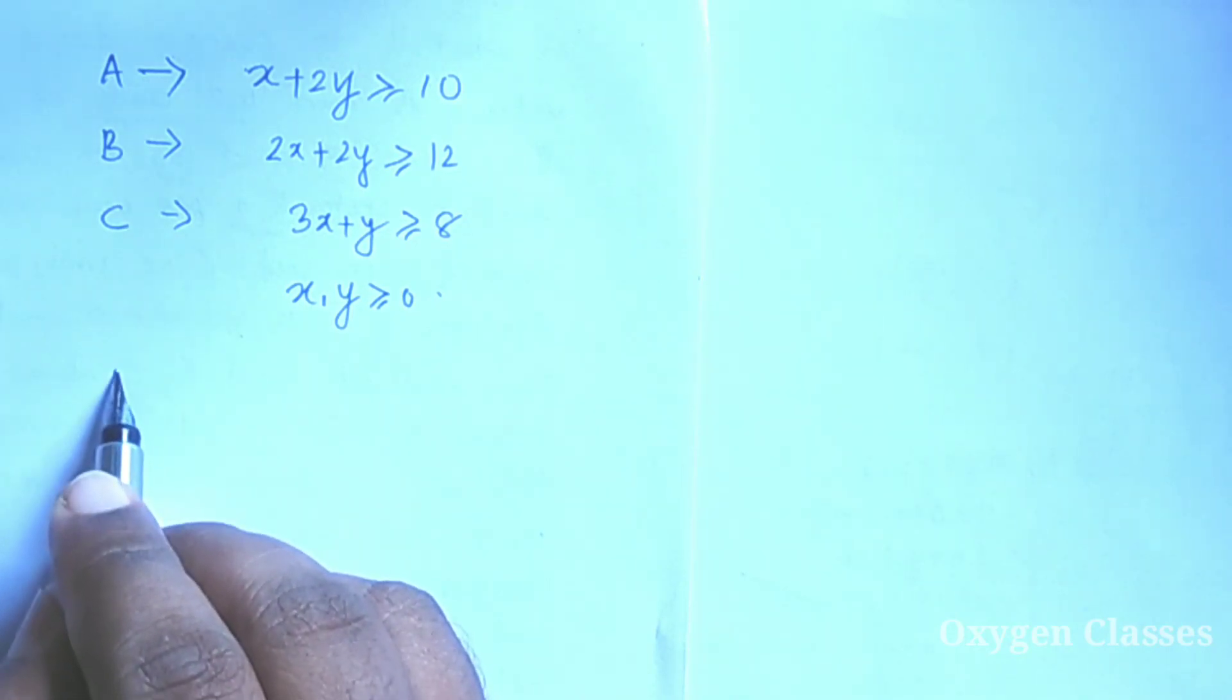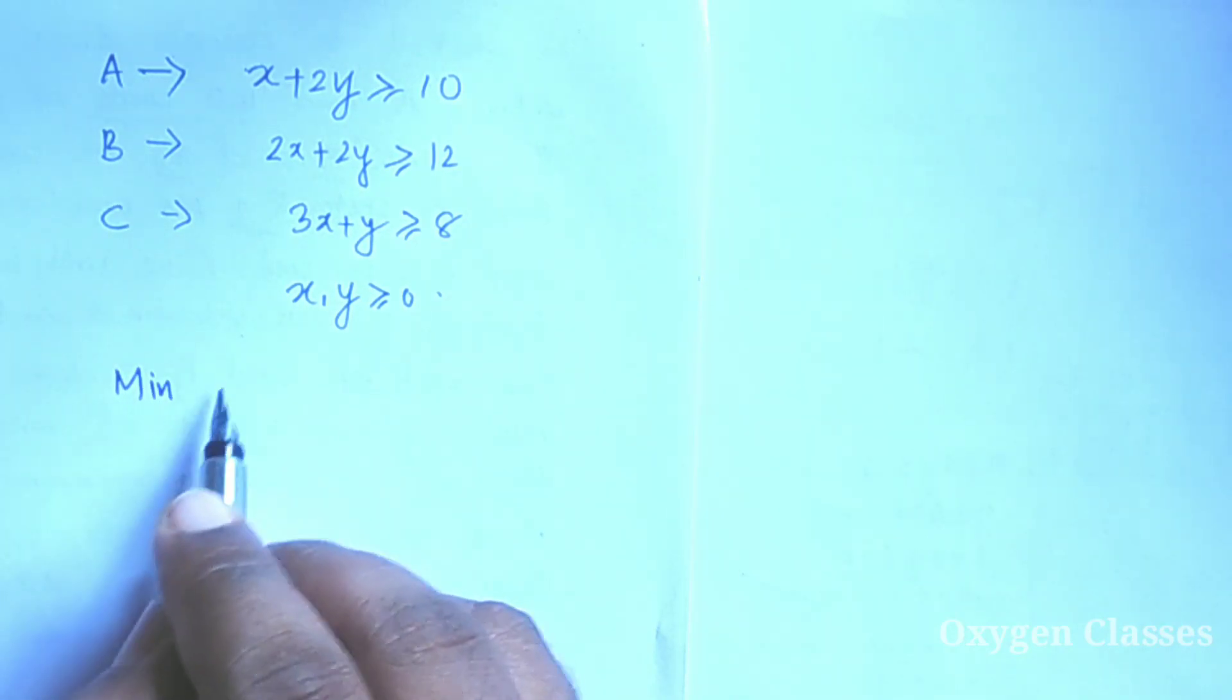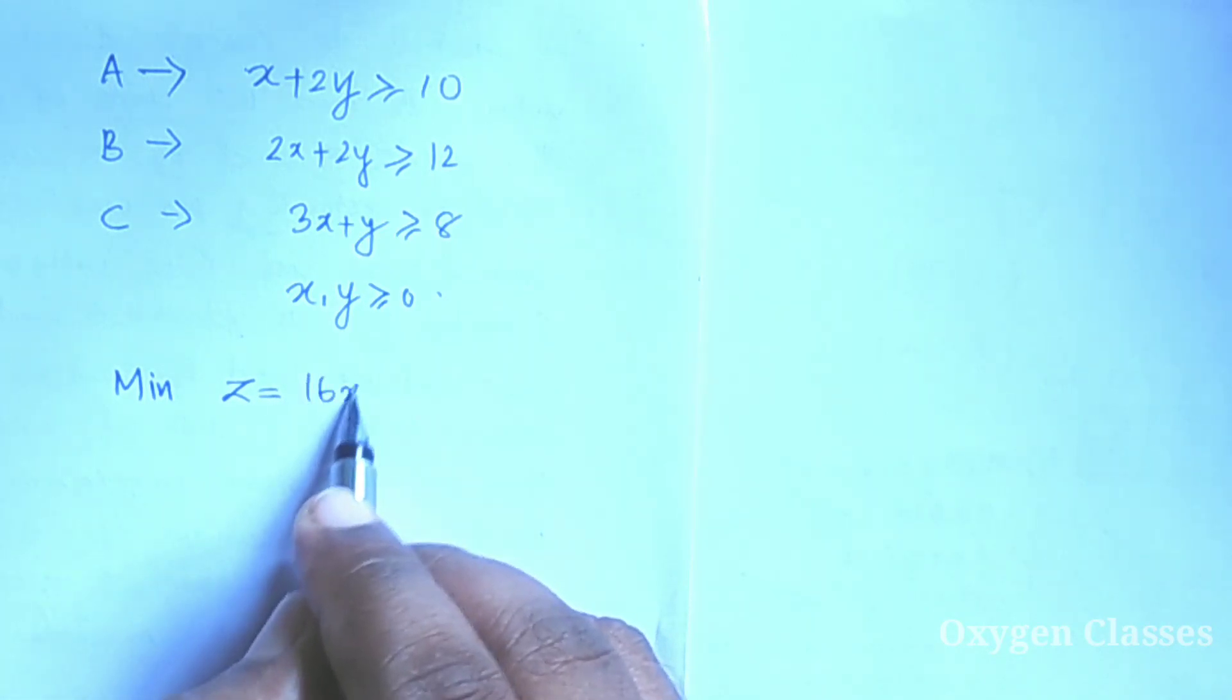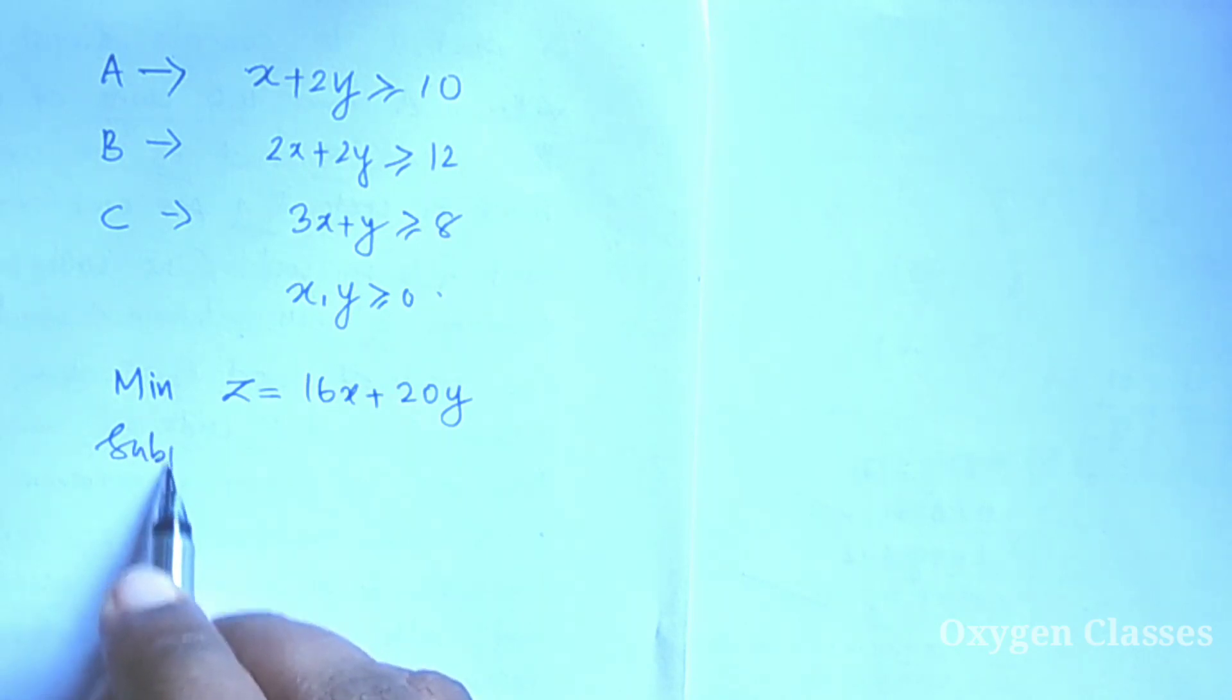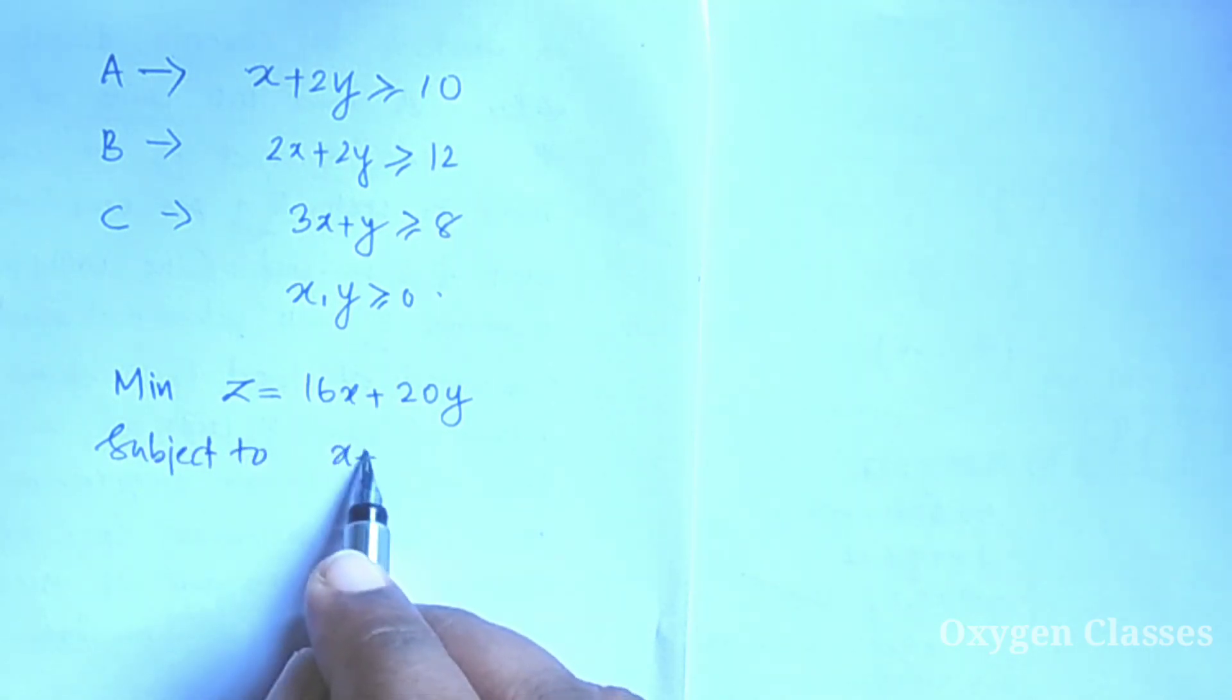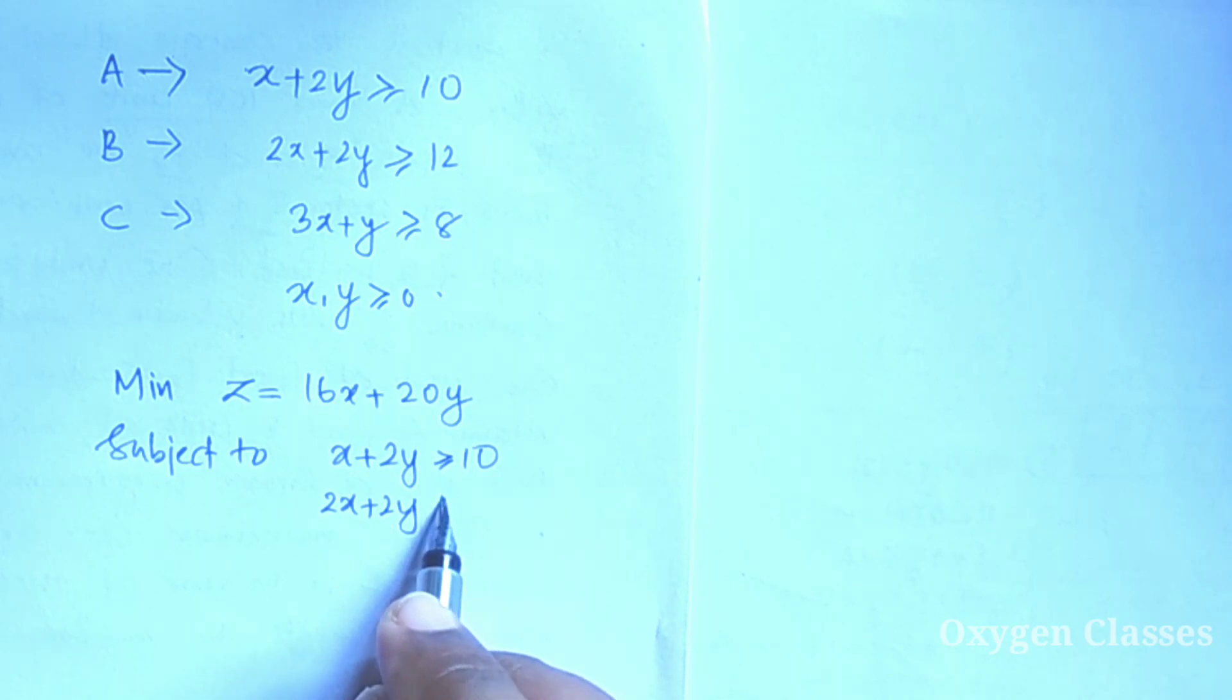Therefore, the mathematical linear programming problem is: minimize Z equals 16X plus 20Y subject to X plus 2Y greater than or equal to 10, 2X plus 2Y greater than or equal to 12, 3X plus Y greater than or equal to 8, and X, Y greater than or equal to 0.